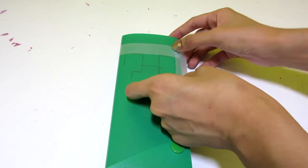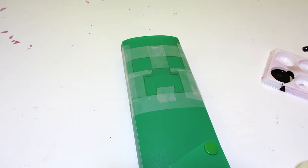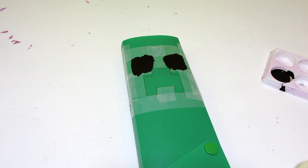So now that we have our Creeper drawn on, go ahead and tape the outer edges. Once you've done that, we're ready to paint. Grab your brush and your black paint and begin painting in your Creeper.